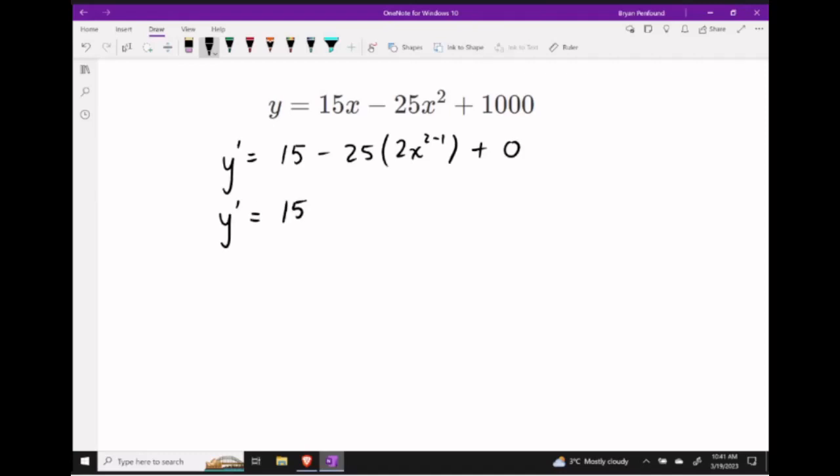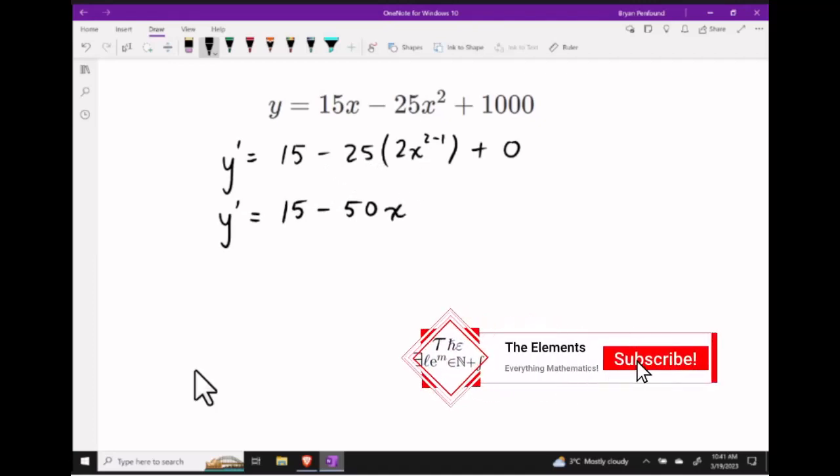To finish up, let's just do some multiplications. 25 times 2 is 50, and our new power of x is the power of 1, so our final answer is 15 minus 50x.